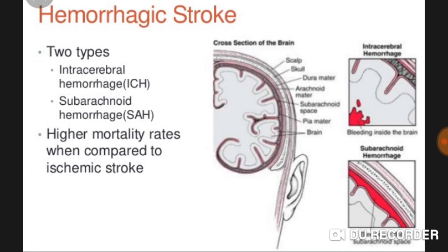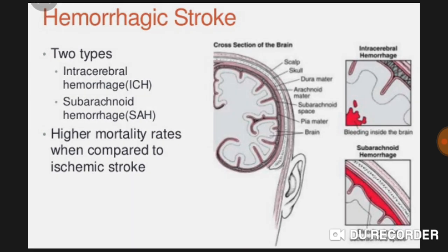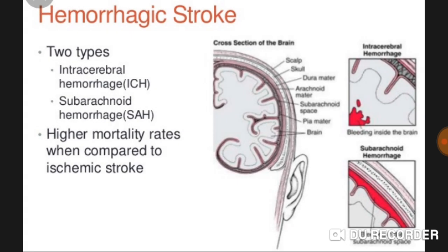Hemorrhagic stroke is of two types: intracerebral hemorrhage and subarachnoid hemorrhage. It has higher mortality rates when compared to ischemic stroke. As you see in the diagram, both intracerebral hemorrhage and subarachnoid hemorrhage are shown. My patient is suffering from intracerebral hemorrhage due to very high blood pressure.